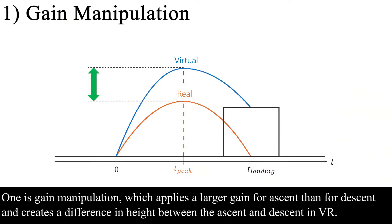One is gain manipulation, which applies a larger gain for ascent than for descent and creates a difference in height between the ascent and descent in VR.